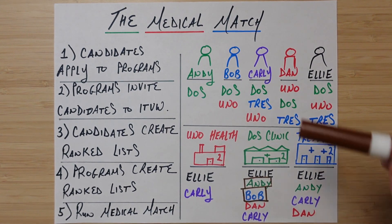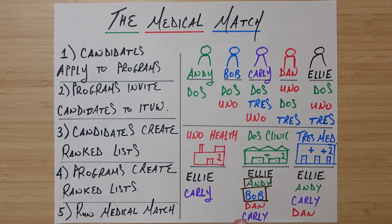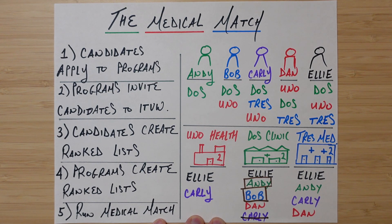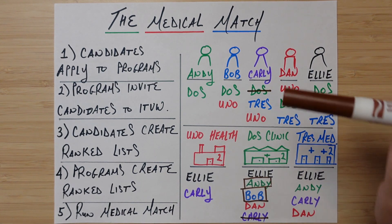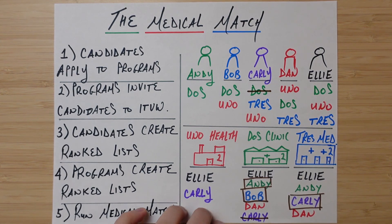Now things get interesting. Carly says her first choice is also Dose Clinic. Carly is in fact ranked there, but she's ranked below two candidates who are preferred by Dose Clinic. Because of that, it would be inefficient to add Carly and remove either Andy or Bob — that would leave Dose Clinic in a worse position. So Carly cannot go to Dose Clinic. We cross that off. But we check Carly's next preference — Trace Medical. Carly is listed there and they have two open spots, so Carly is temporarily matched at Trace Medical.